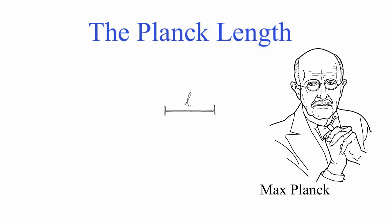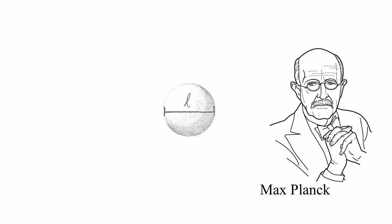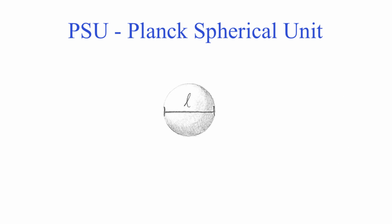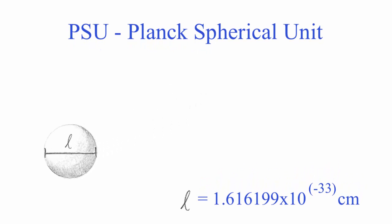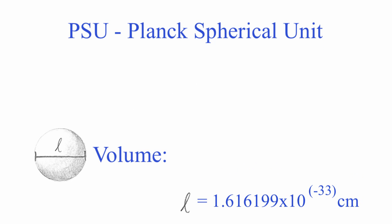Now, if we take this length and we make it the diameter of a sphere, we now have one Planck spherical unit or one PSU. This is a brand new unit of measurement in the world of science. The Planck spherical unit, the PSU. There are two things we need to know about this PSU before we can continue. We need to know its volume and its circle area. Basic geometry.